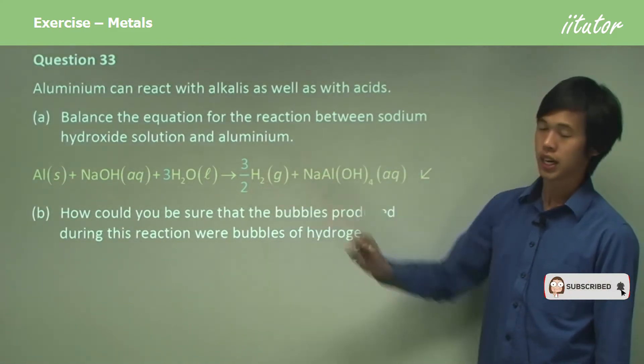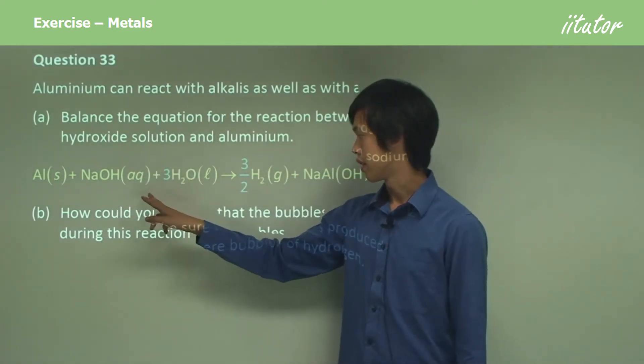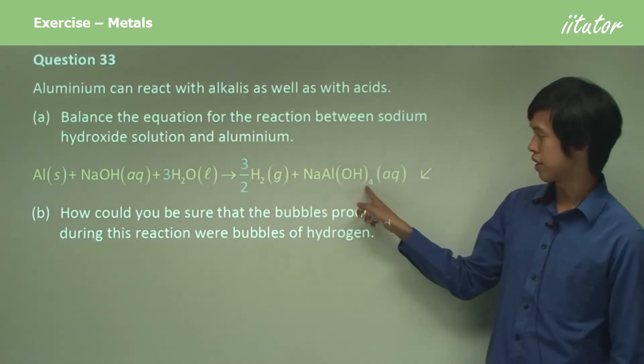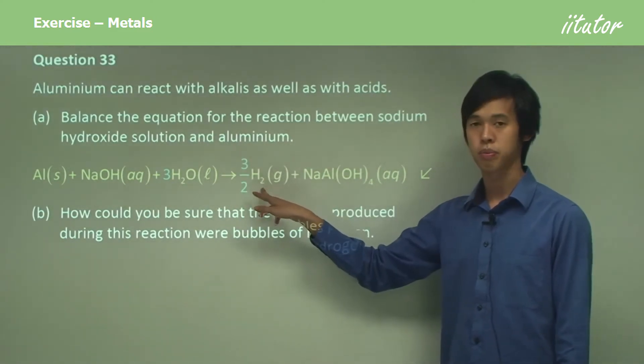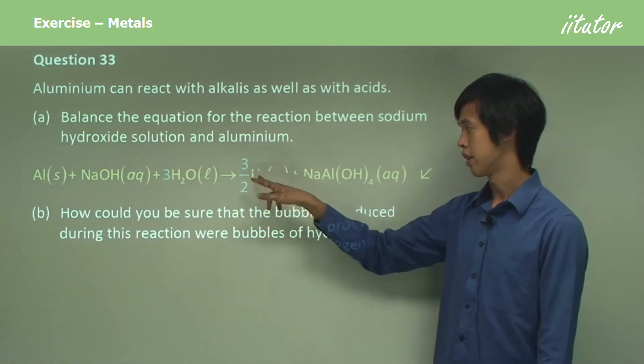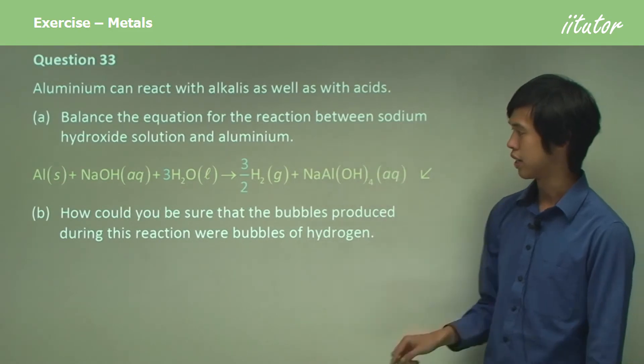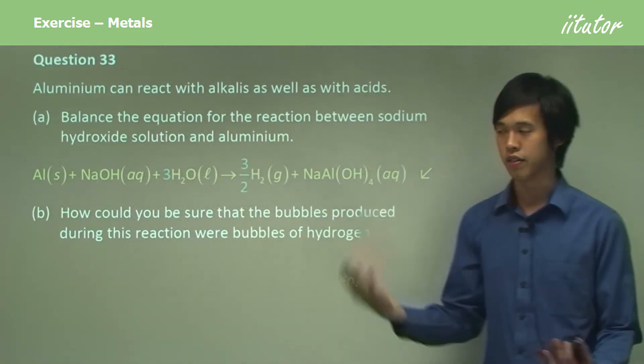Then we just have to balance for the hydrogen. There are one plus six, which is seven hydrogens on this side, and we've got four hydrogens on this side. We need another three hydrogens to come from here, so we multiply by three over two. We have three hydrogens here, four hydrogens here, seven hydrogens on the right. Everything's balanced.